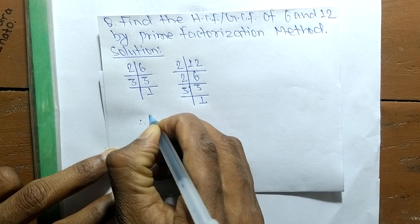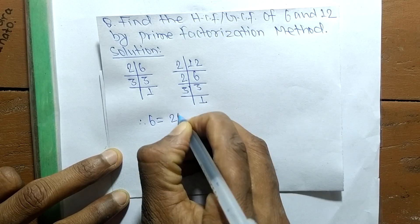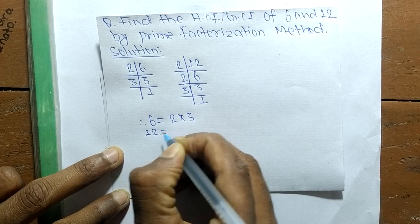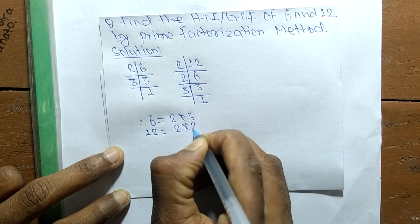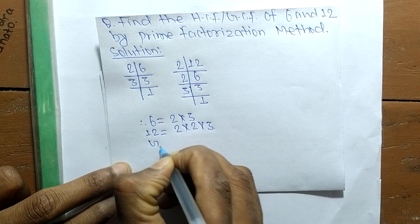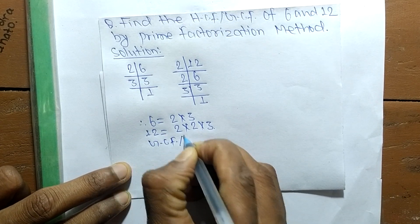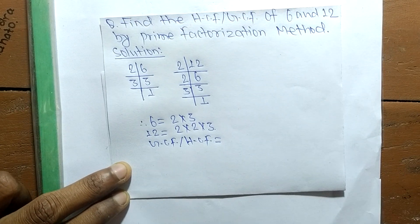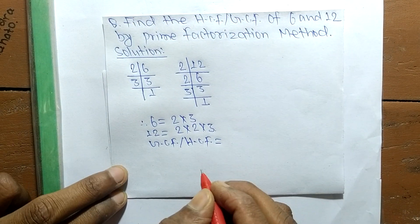We can write 6 equals 2 into 3, and 12 equals 2 into 2 into 3. So its GCF or HCF is equal to... Now we have to find out the common factors in all these prime factors.